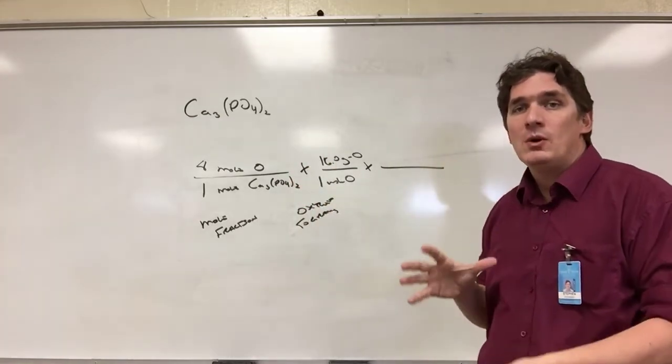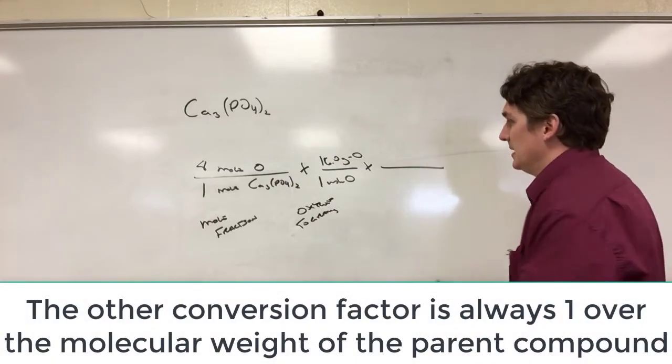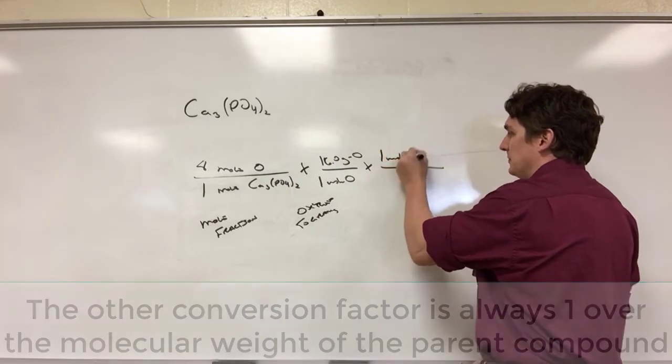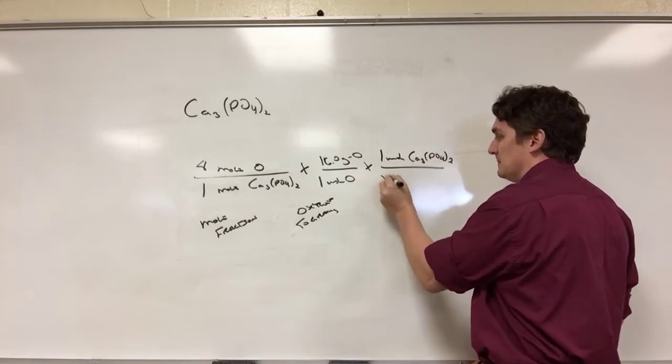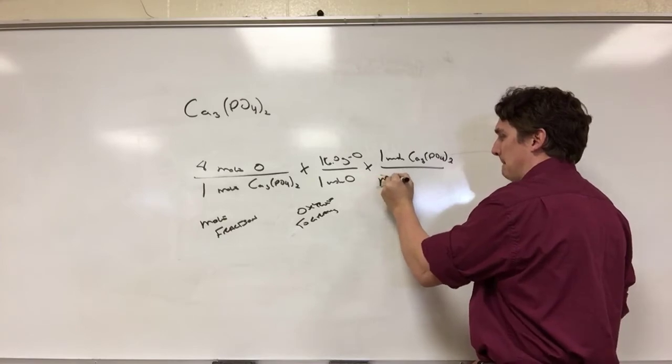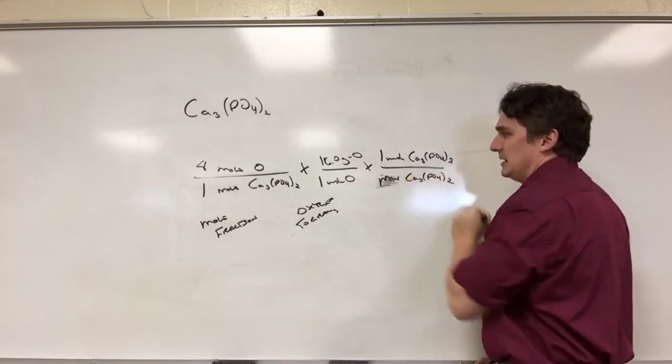The other one is going to be one over the molecular weight of the parent compound and this is always going to be the same. So for every mole of Ca3(PO4)2 taken twice I have so many grams for the molecular weight of Ca3(PO4)2 taken twice.